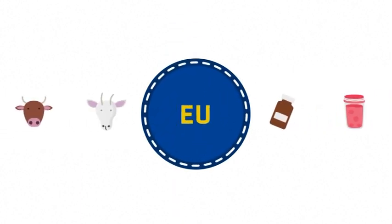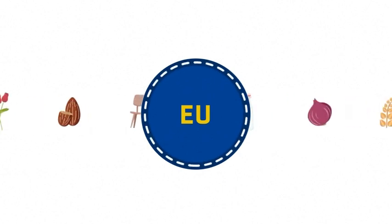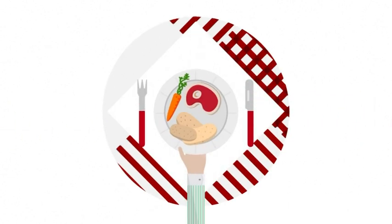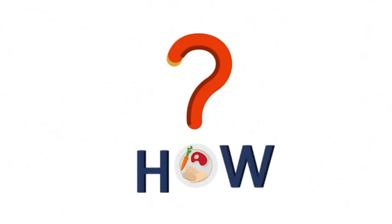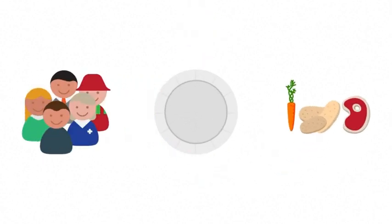Each year vast quantities of livestock and produce are traded into the European Union to be served on 500 million European plates, raising the question, how can the European Commission ensure that both food and consumers are kept safe?